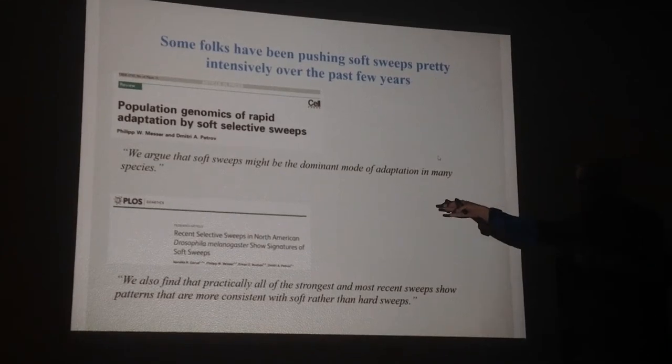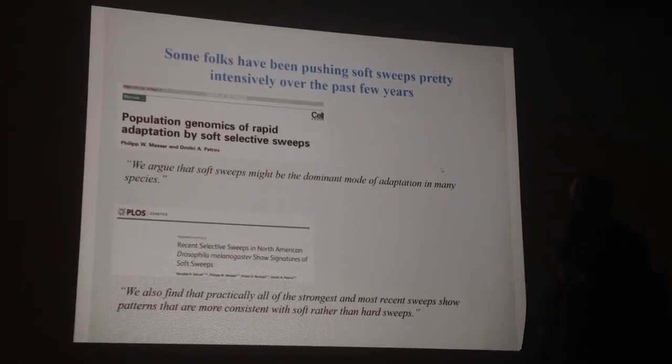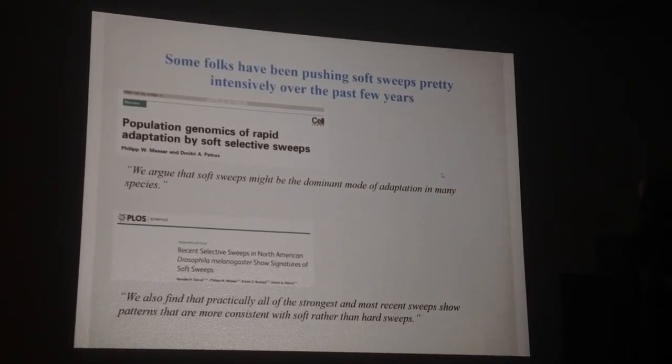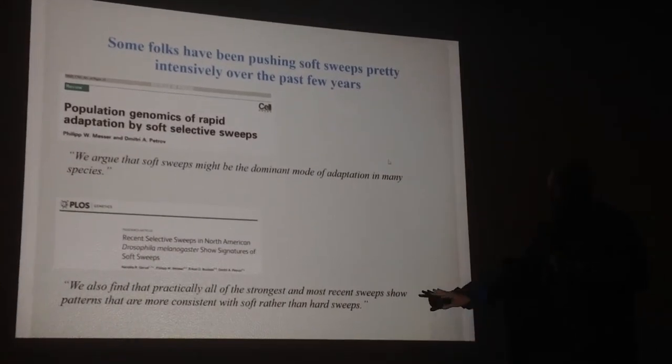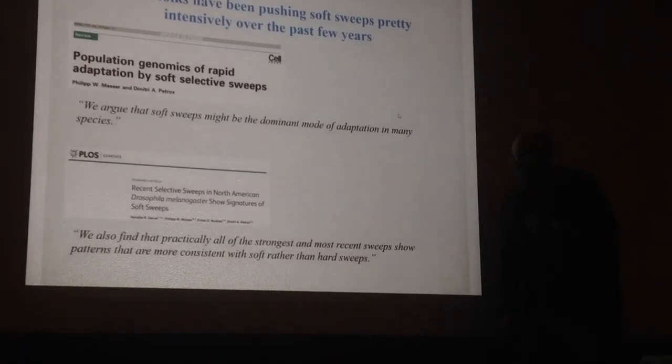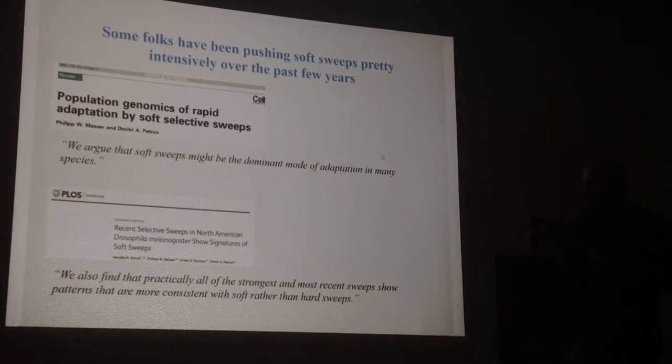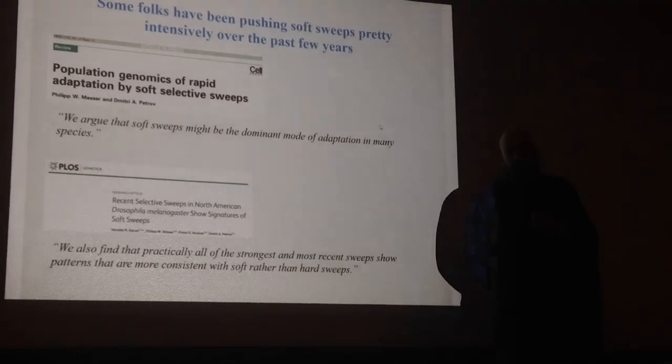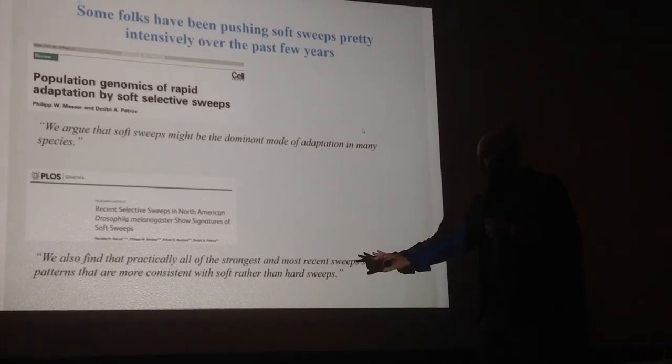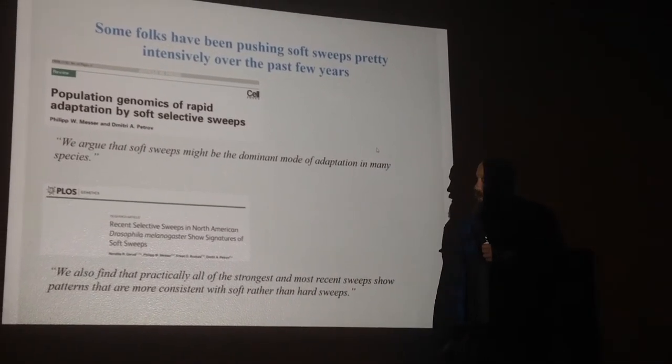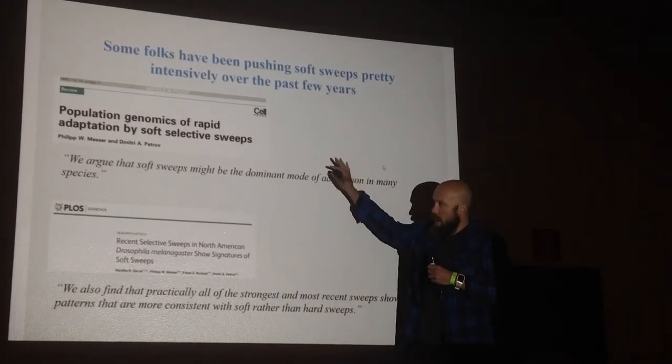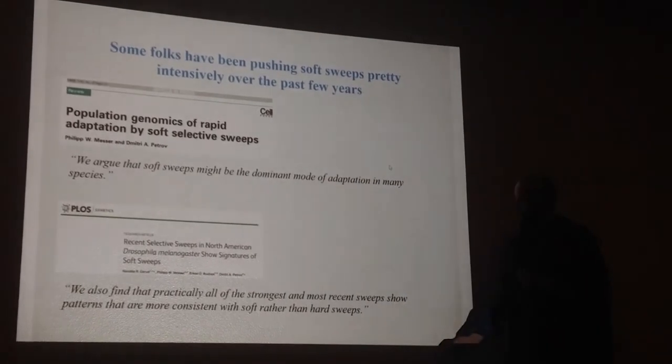A recent review commentary arguing that soft sweeps might be the dominant mode of adaptation across many different kinds of species. And a recent research paper saying that practically all of the strongest and most recent sweeps in Drosophila melanogaster, the top 50 hits, are all more consistent with soft rather than hard sweeps.